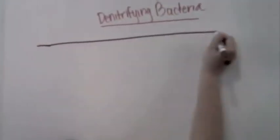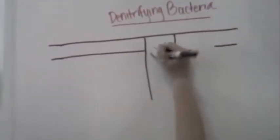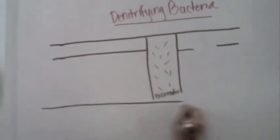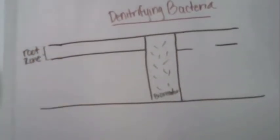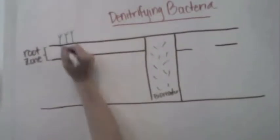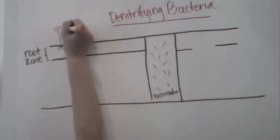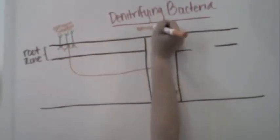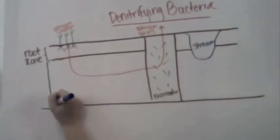A recent addition to PRB technology is the use of denitrifying bioreactors, which serve as a bio-barrier in agricultural and groundwater systems. This denitrification bio-barrier converts leached nitrates into nitrogen gas.